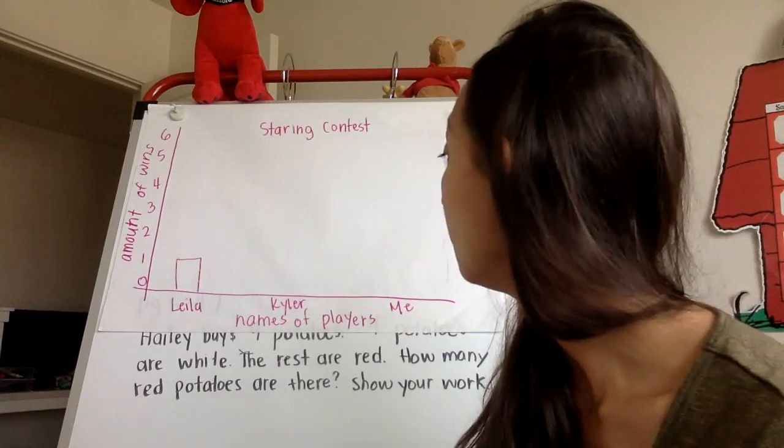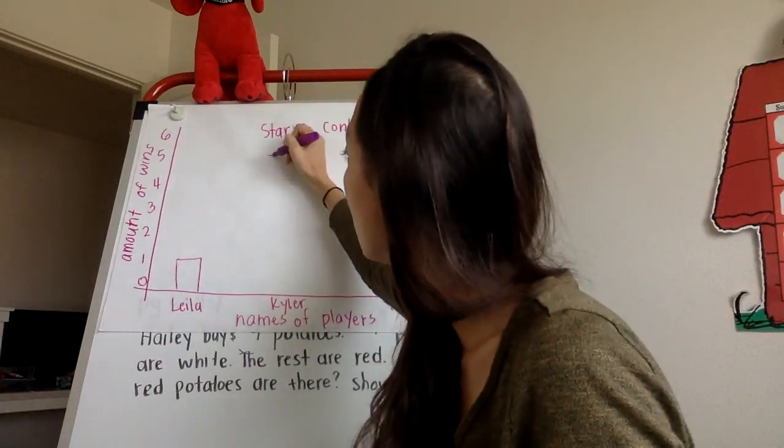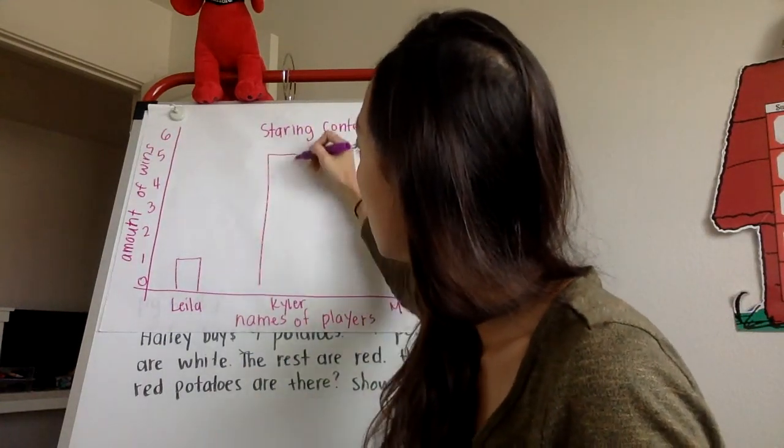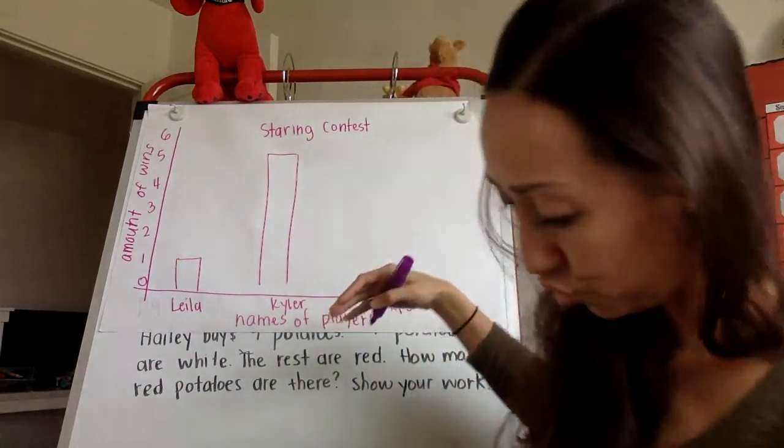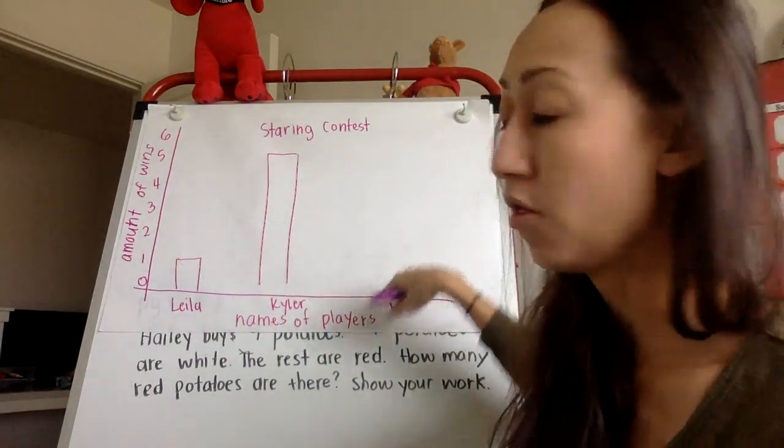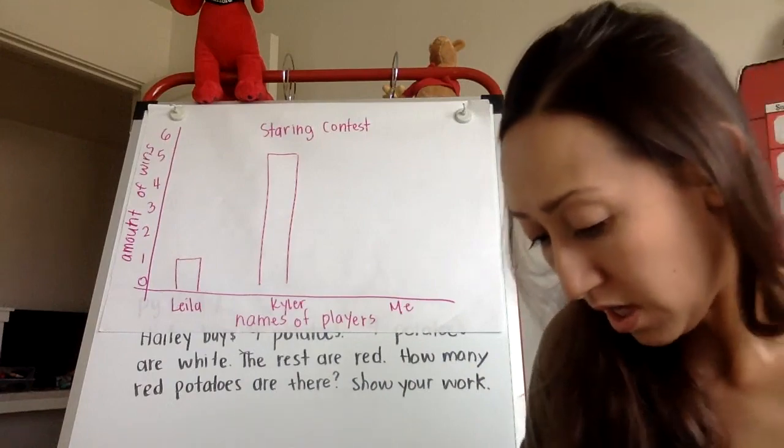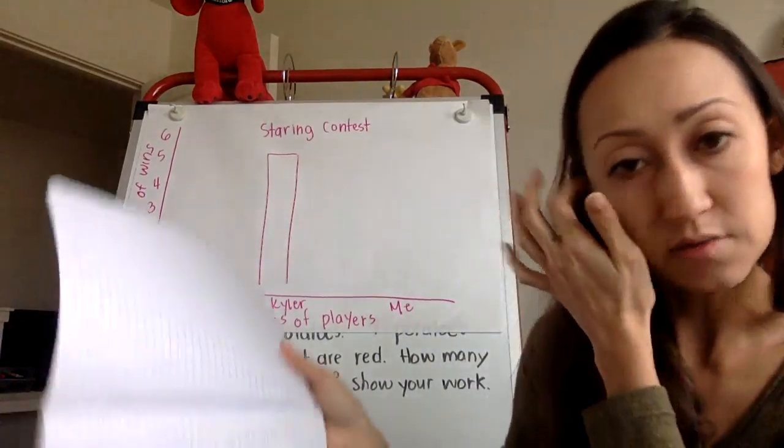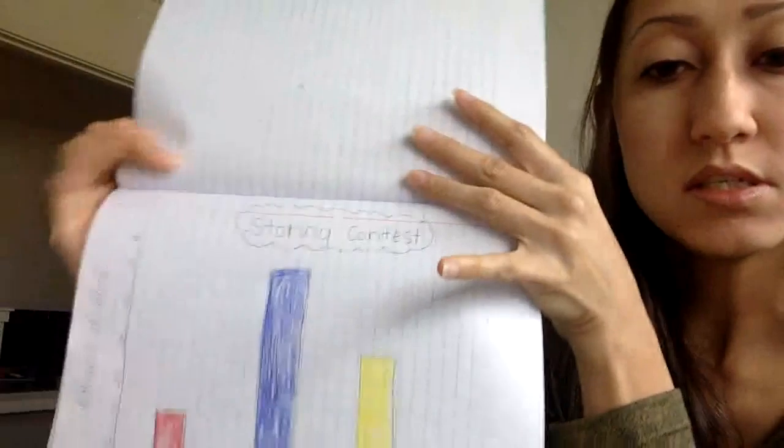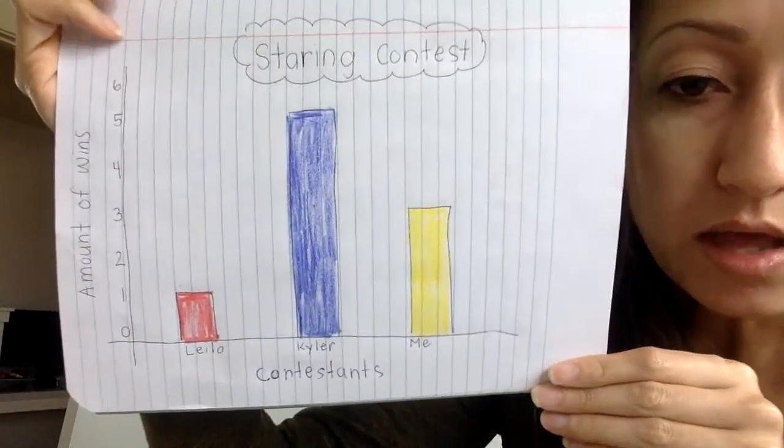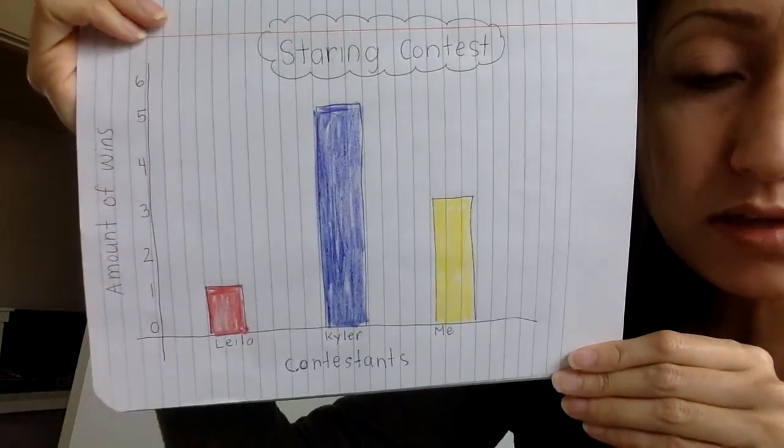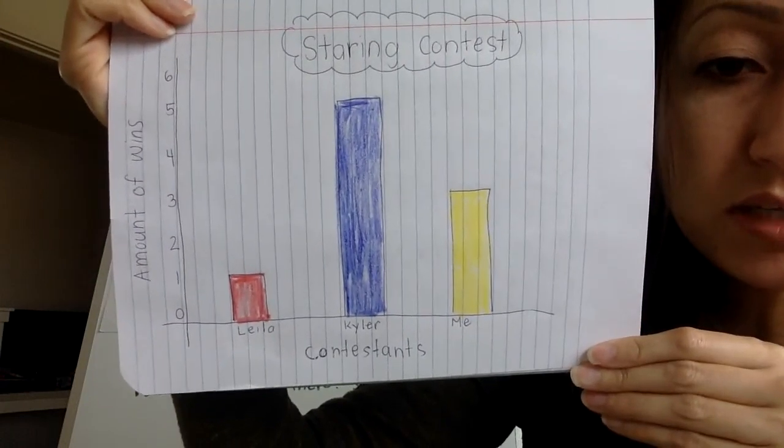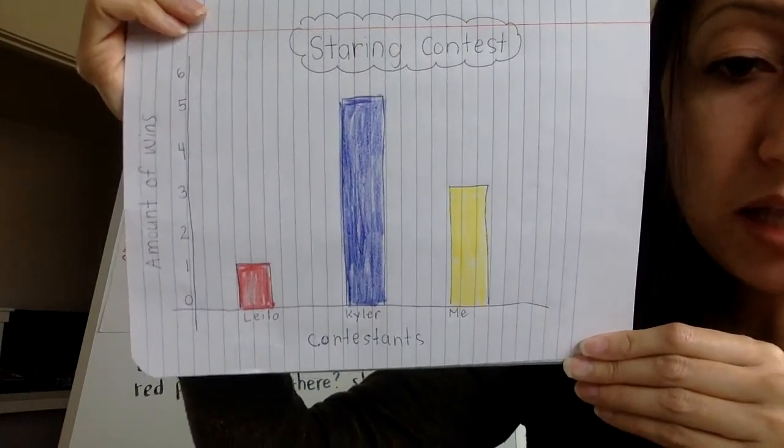Kyler won five, and so his bar graph would go all the way up there. And I won two, so I would draw a bar graph all the way up there to two. Let me show you an example of my finished product. This is how yours might end up looking, but everyone's going to be slightly different. This is an example of what mine ended up looking like.